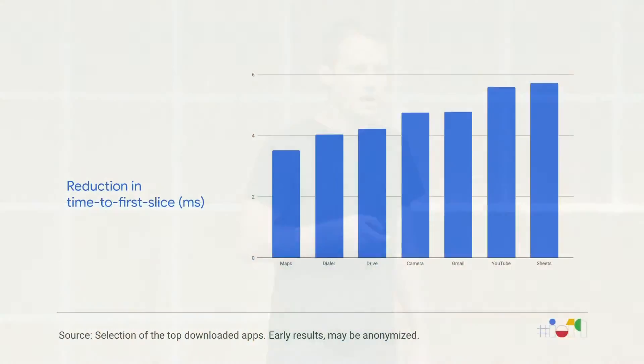I want to mention the metric directly impacted by these changes: time-to-first-slice, which measures how quickly we can begin running application-specific code. As we can see in this graph, there is a fairly uniform improvement of approximately five milliseconds to the time-to-first-slice metric for seven apps on a Pixel 2 device. However, this is just the beginning — follow-up work currently in testing shows an additional speedup on the order of tens of milliseconds. Best of all, all applications will see these improvements without requiring any changes to their application or device usage.